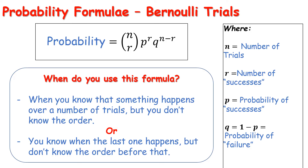A second situation for using this formula is when you know when the last event happens but you don't know the order before that. This is an extension of Bernoulli: we split the problem into the piece where we don't know the order — the Bernoulli piece — and the piece where we do know the order. For example, if you toss a coin four times and want the probability that the fourth toss is the third head: you know heads happens right then, but you need to understand what happens before, where the order is unknown.